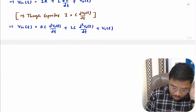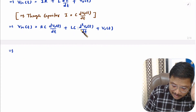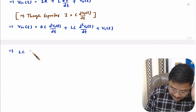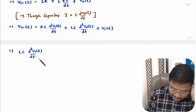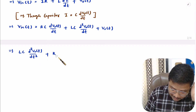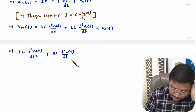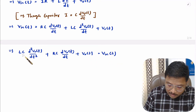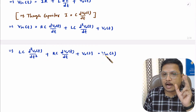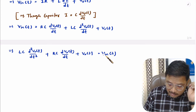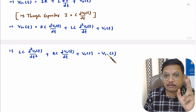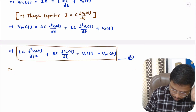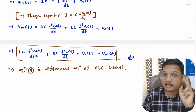To simplify further, taking the differential terms to one side with the highest order written first: LC d²V_out/dt² plus RC dV_out/dt plus V_out(t) equals V_in(t). This is the differential equation relating output voltage to input voltage — this is the differential equation model. Let us call this equation A.